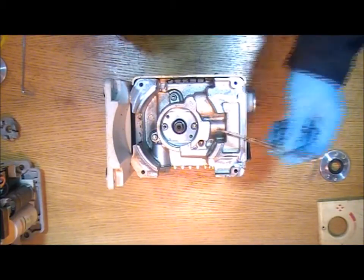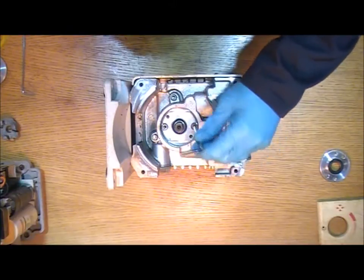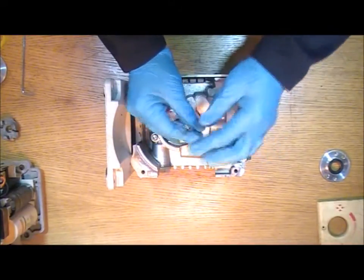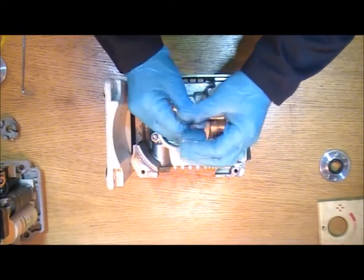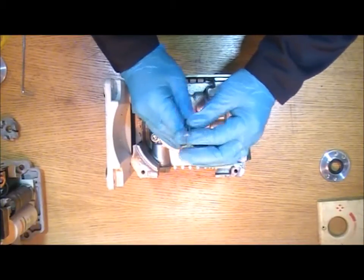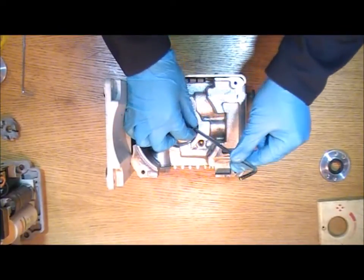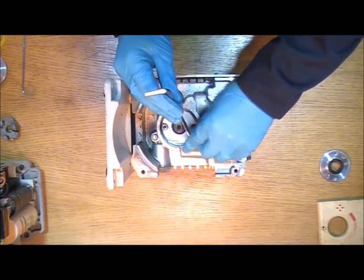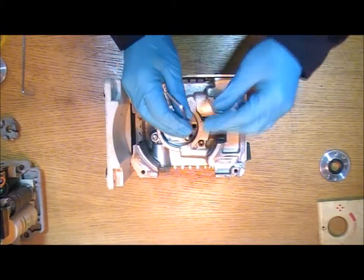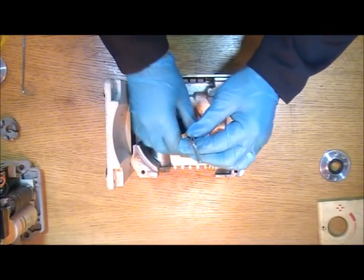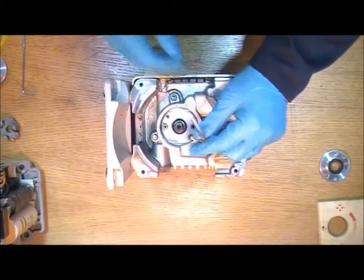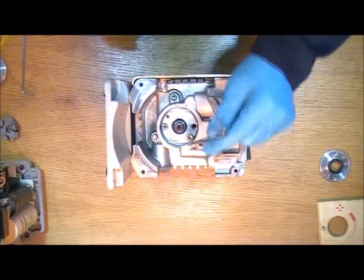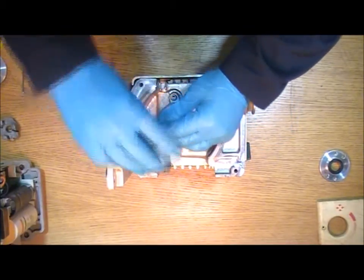So to remove the old seal you need to undo the two allen bolts that are here with your 5mm key. And as they come out if you move them directly to the adjacent hole which is threaded, just drive the bolt in so it's secure but don't tighten it down. And then do the same with the other one.